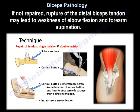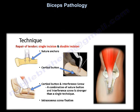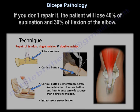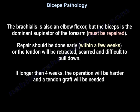If not repaired, rupture of the distal biceps tendon may lead to weakness of elbow flexion and forearm supination — the patient will lose 40% of supination and 30% of flexion of the elbow. The brachialis is also an elbow flexor, but the biceps is the dominant supinator of the forearm. The repair should be done early within a few weeks, or the tendon will be retracted, scarred, and difficult to pull down. If longer than four weeks, the operation will be harder and a tendon graft may be needed.